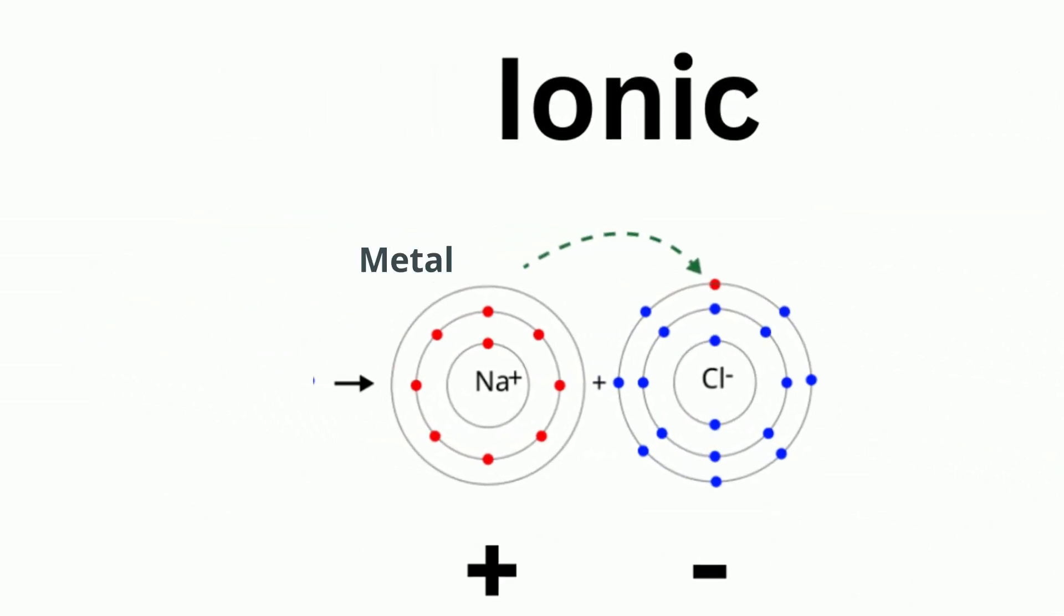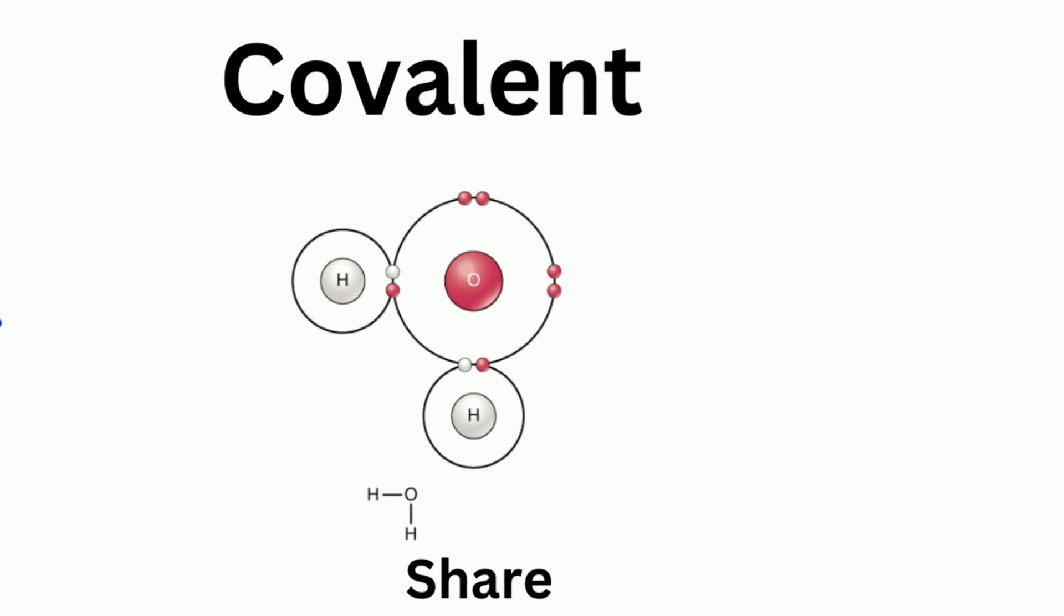Ionic bonds are formed from metals and nonmetals, or a metal and a polyatomic ion, which are typically made of nonmetals. Covalent bonds are formed from two or more nonmetals.